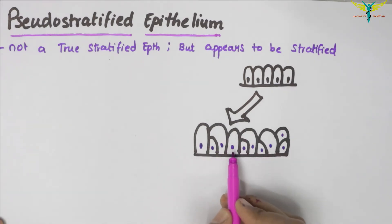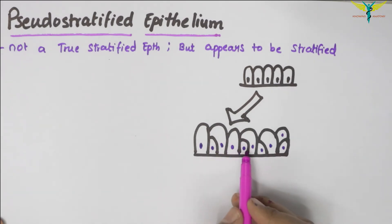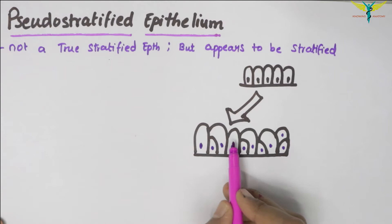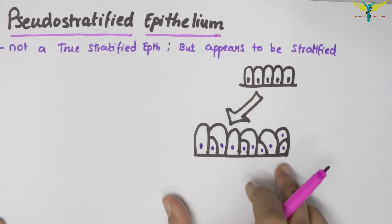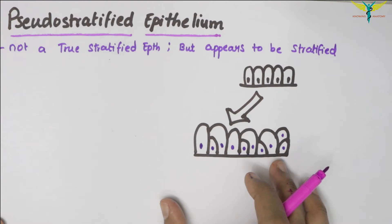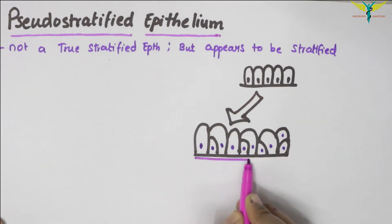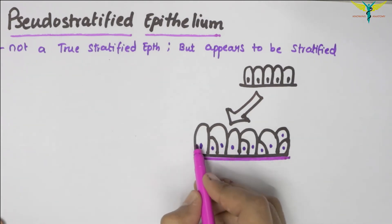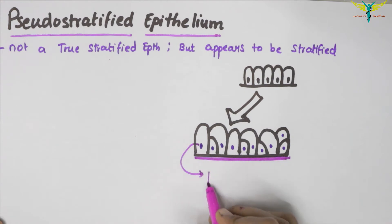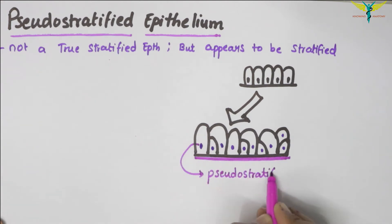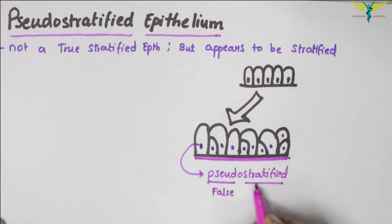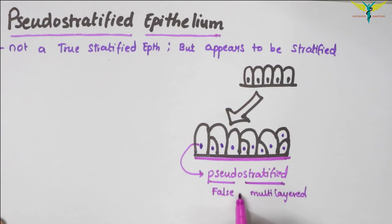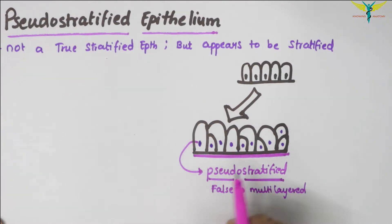The nuclei appear to be arranged in two or more rows, giving an impression of this epithelium being more than one layer thick. This is the basement membrane, and this epithelium is called pseudo-stratified epithelium. The name 'pseudo' means false and 'stratified' means multilayered — so it is false multilayered.